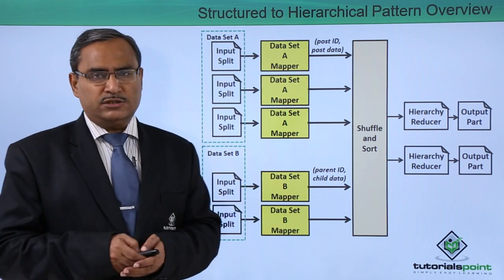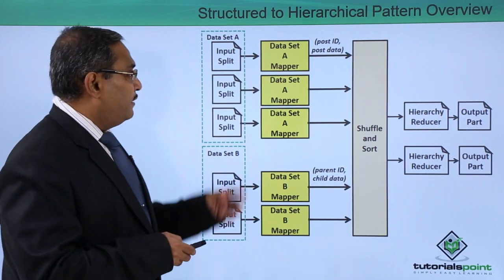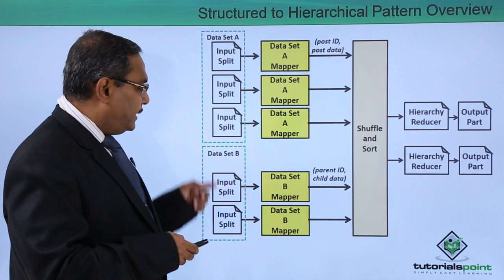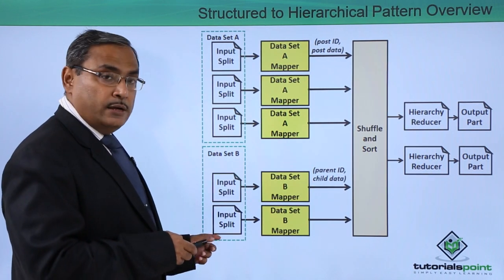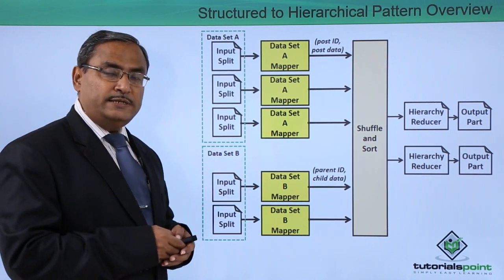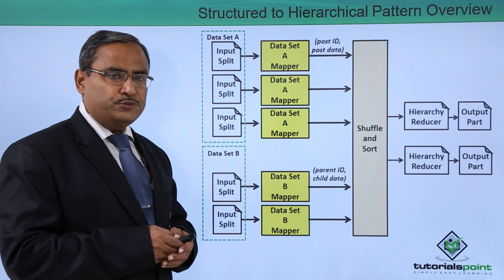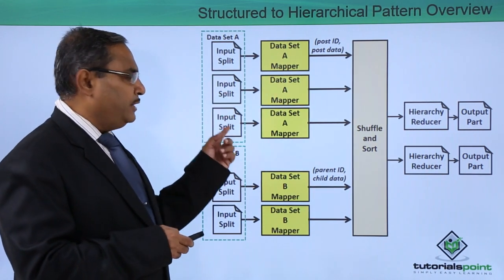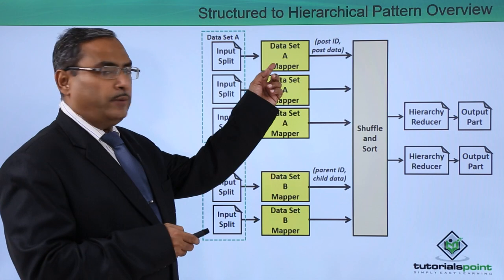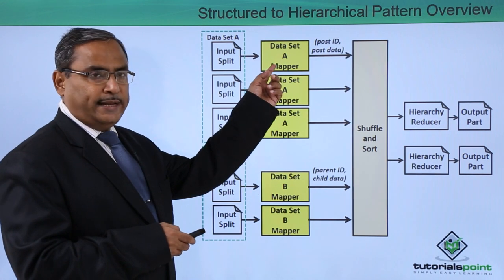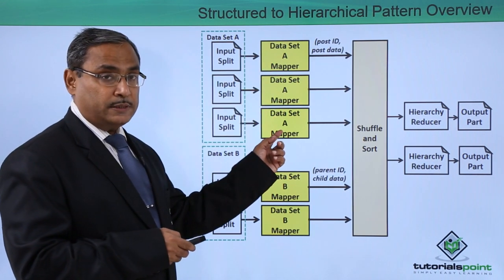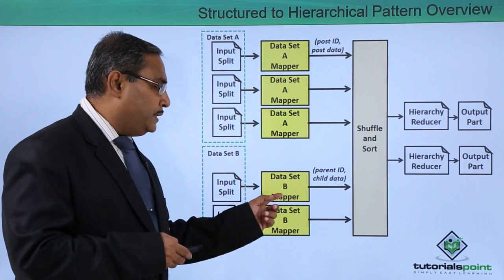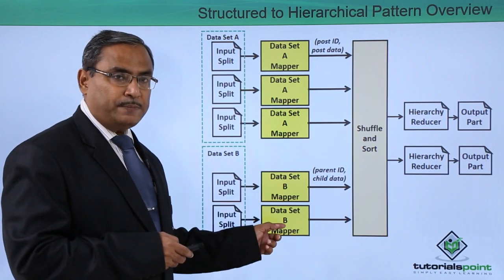Let us discuss this with one diagram. We have dataset A and dataset B. Depending upon the size of these datasets, the number of input splits will be decided. Here we are having three input splits, which is why we require dataset A mappers — three such mappers. For the other input splits we require dataset B mappers — two such mappers.